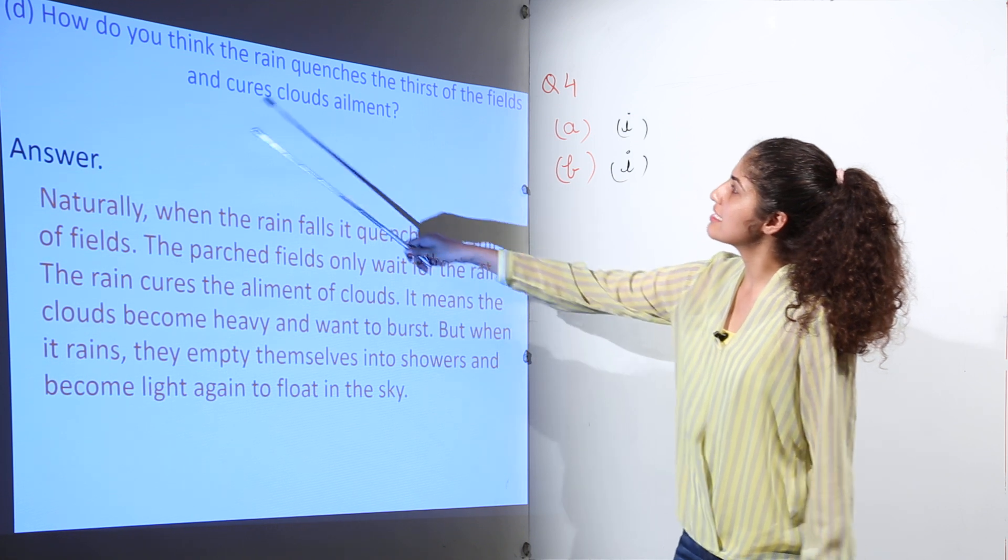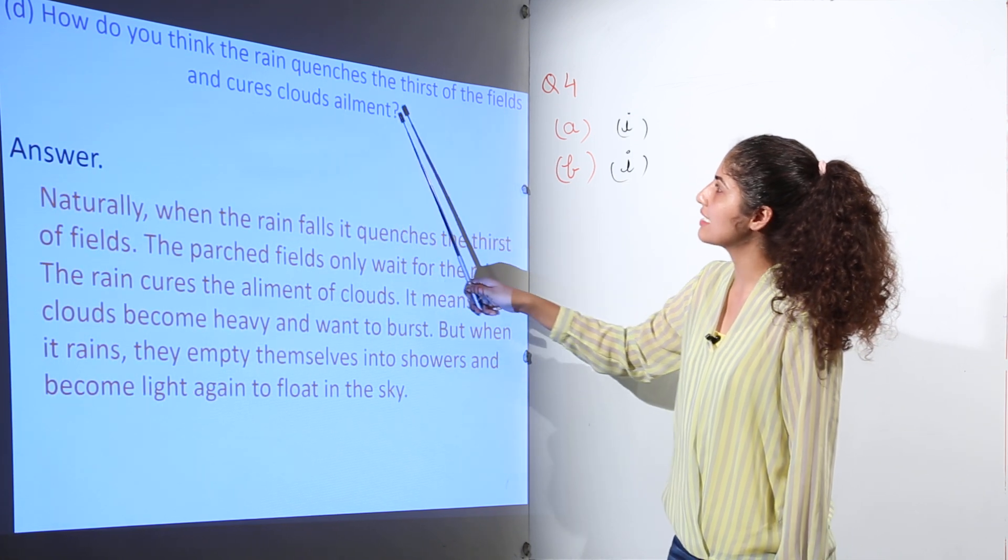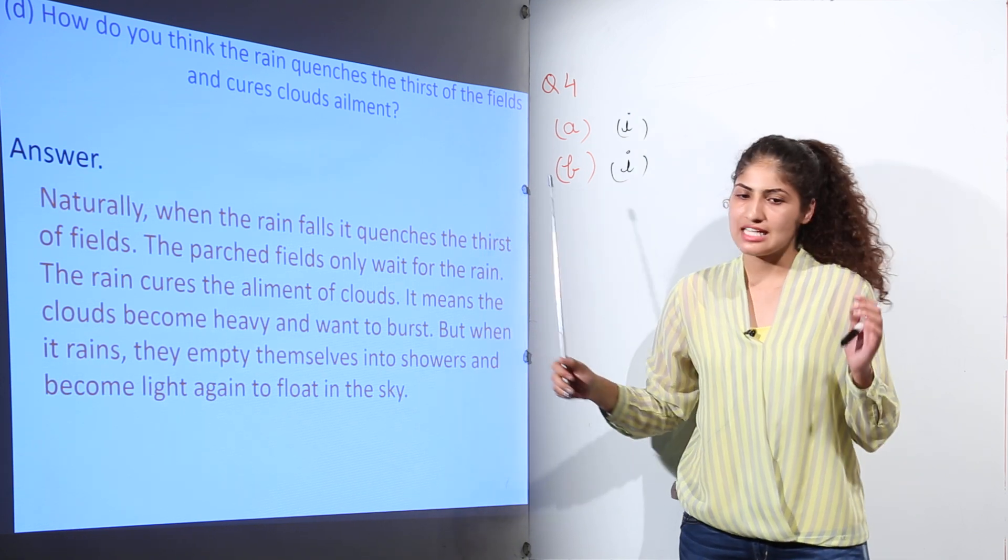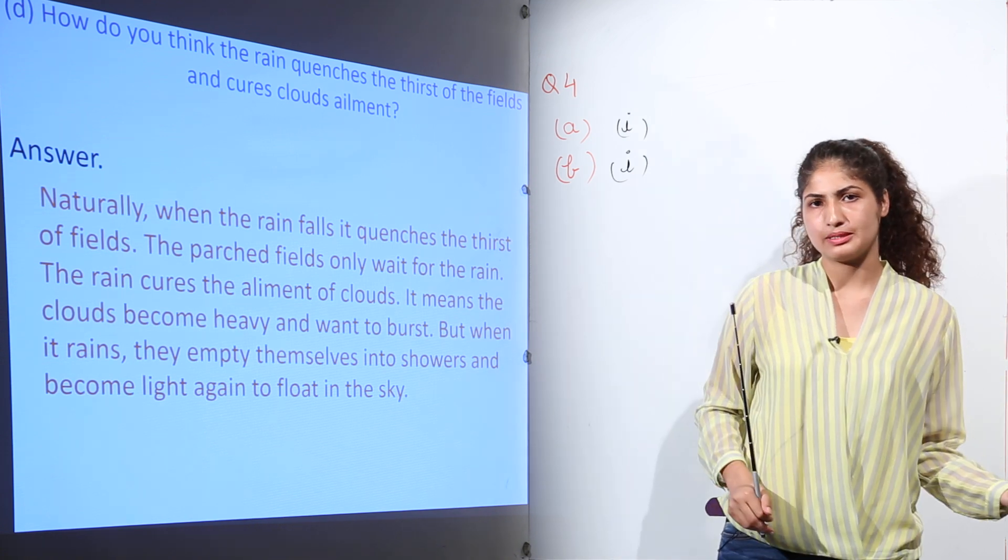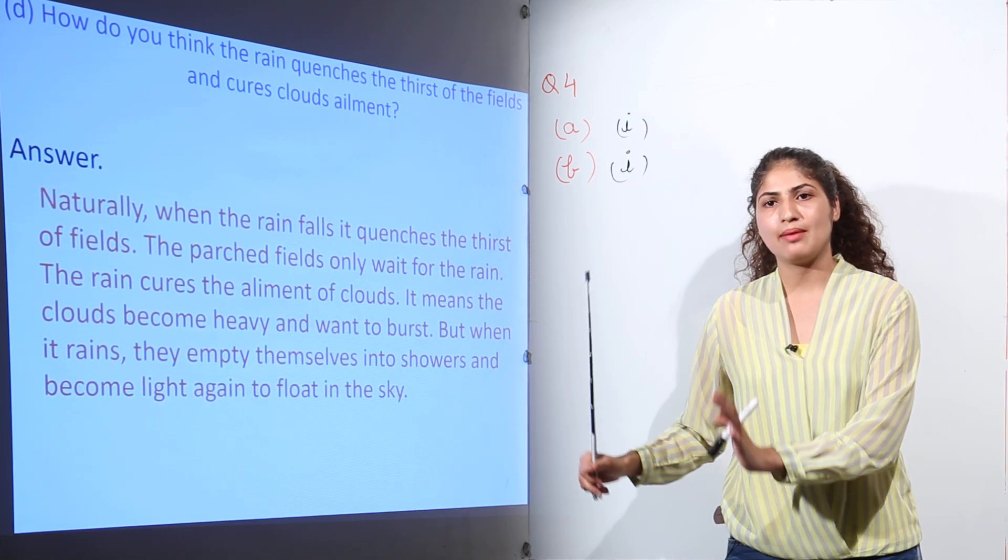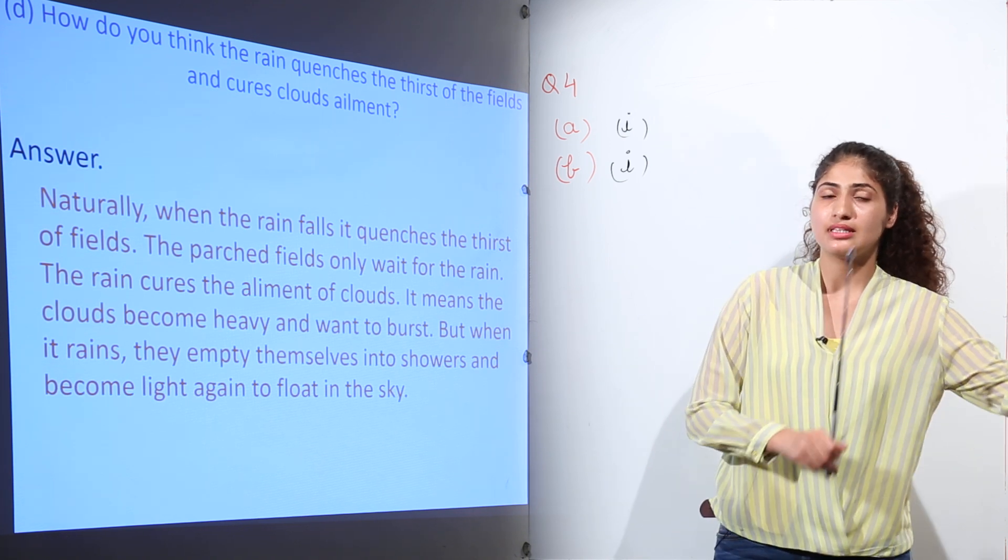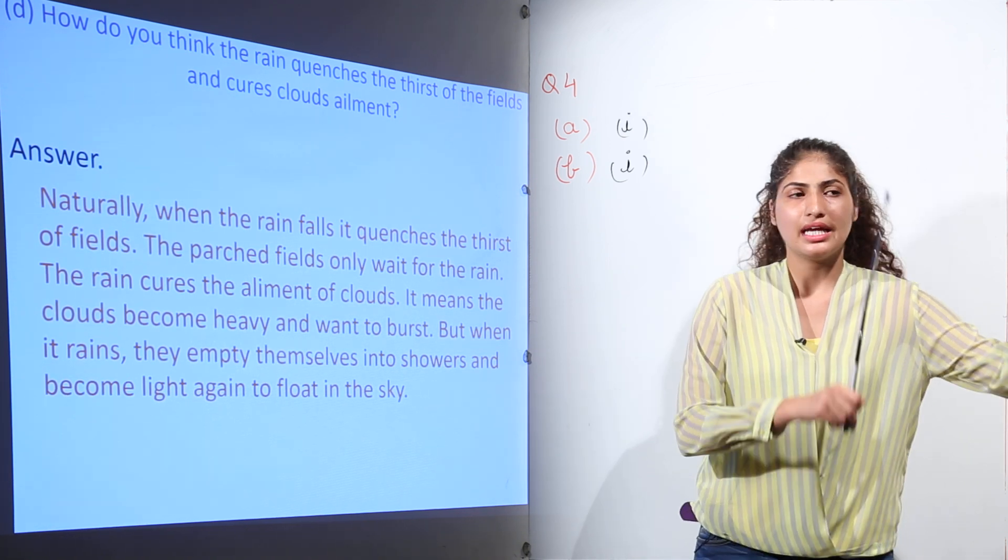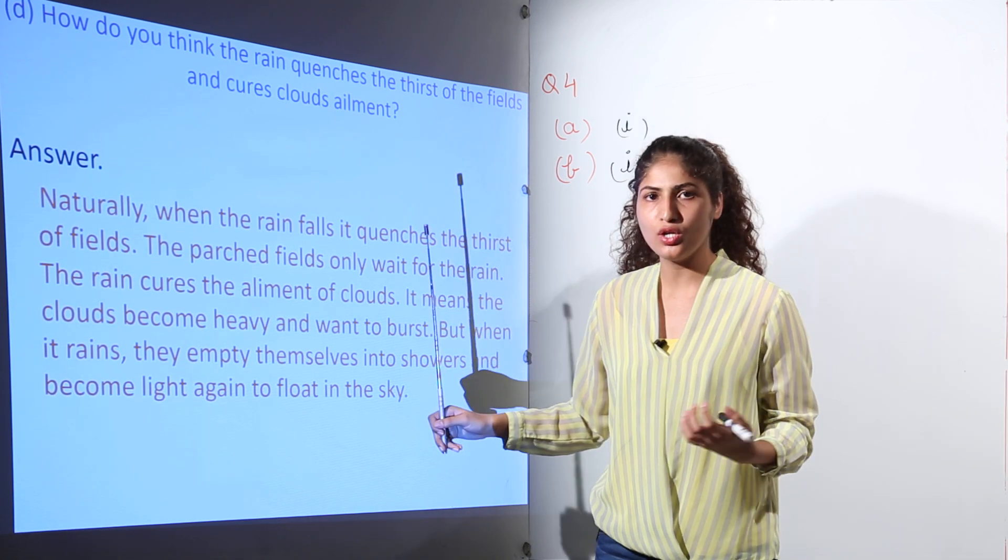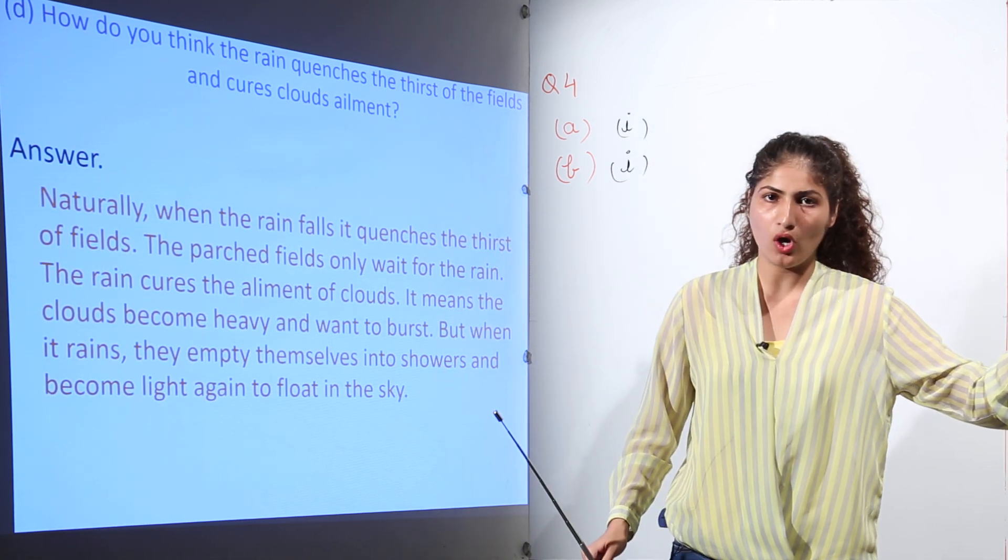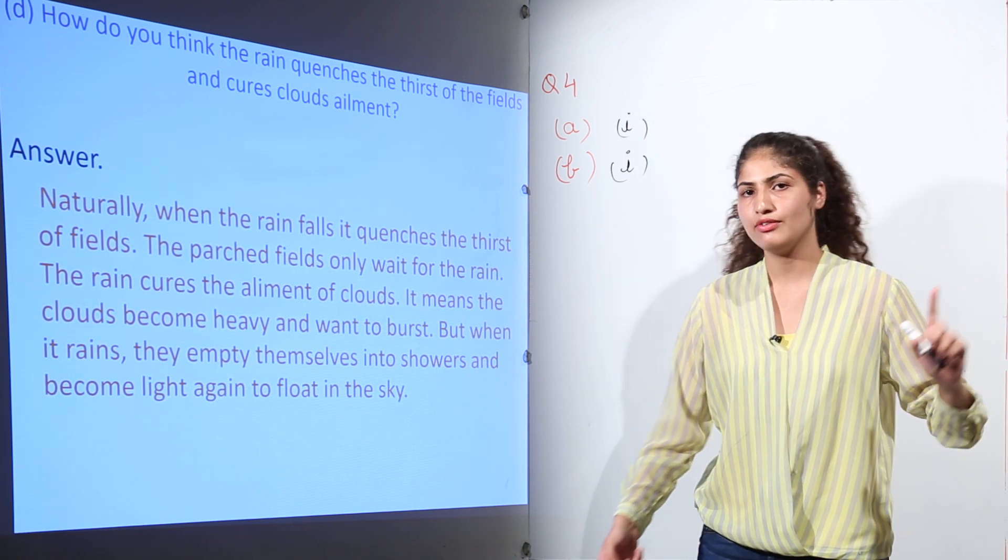Next question: How do you think the rain quenches the thirst of the fields and cures clouds' ailment? As we have already discussed, rain is passing the love letters of the clouds and the fields. At one time, the field is thirsty, it needs water. And in the same time, the cloud is brimming with water, it needs to get rid of the excess water. So it is the rain who is helping in getting rid of the water of the cloud and in satiating the thirst of the fields.